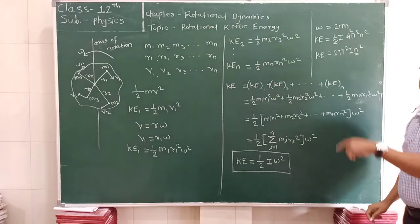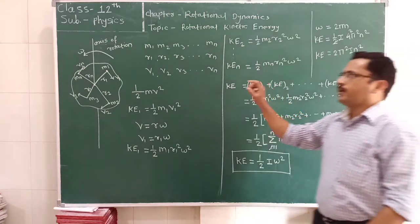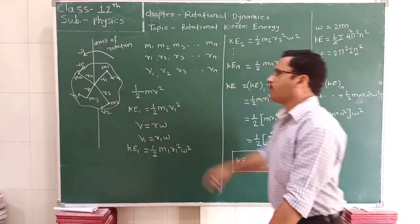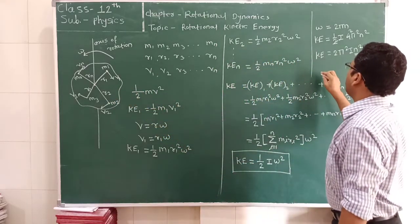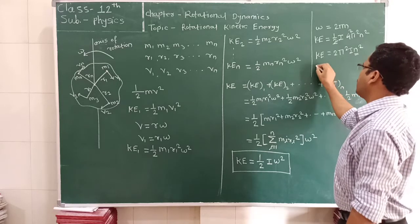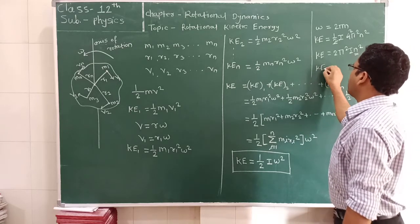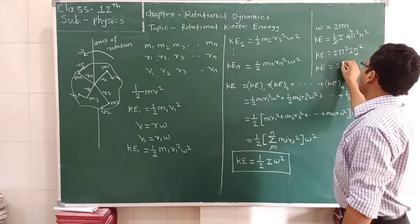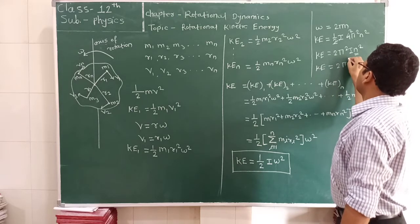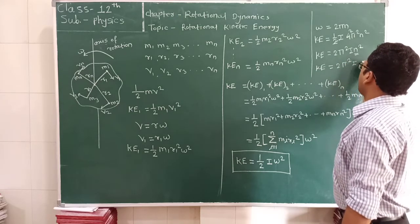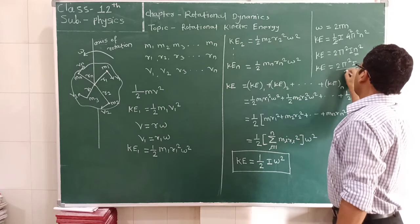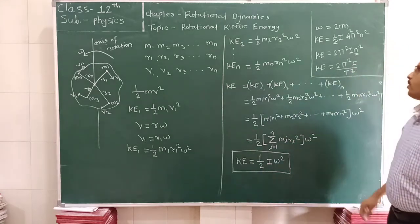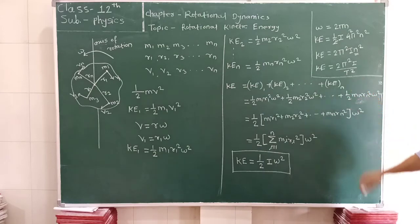In place of frequency, we can also write the time period. The time period is the time required to complete one rotation. We know that n = 1/T. Therefore, this equation can also be written as kinetic energy equals 2π²I/T². So these are the different forms of the rotational kinetic energy.